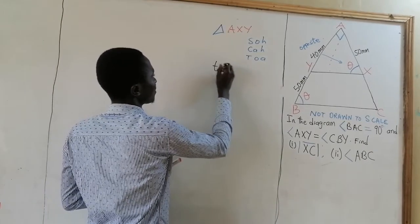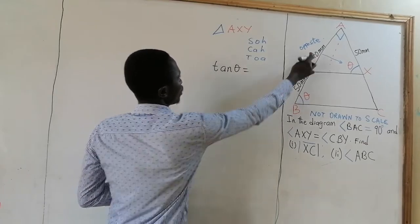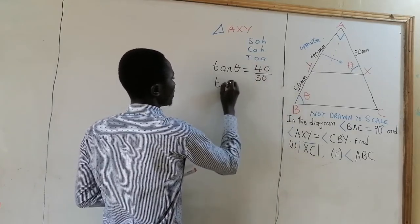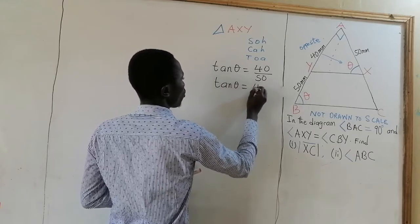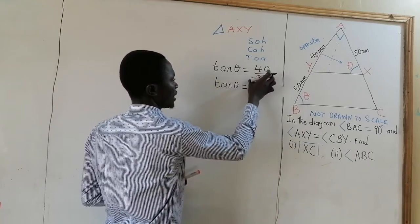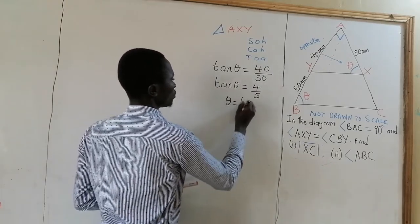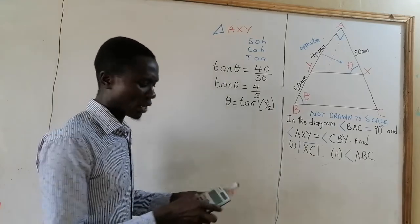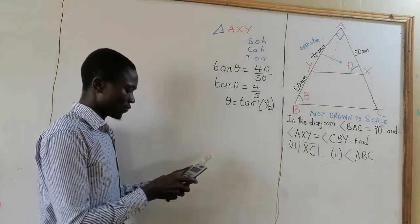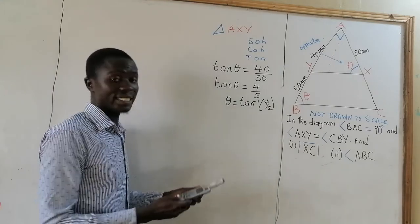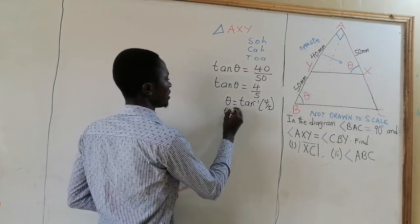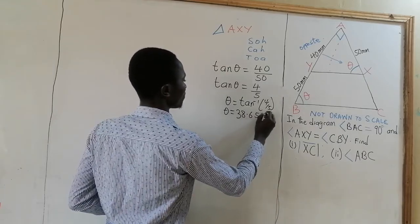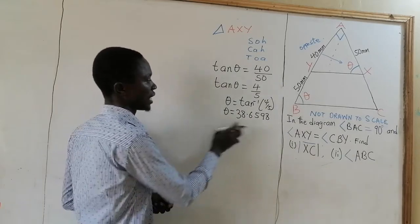Here we are going to have tan theta equals the opposite, which is 40, divided by the adjacent, that is 50. And here we have tan theta equals 4 divided by 5. And theta will equal tan inverse of 4 divided by 5. Now let us use calculator to find that tan inverse of 4 divided by 5. And it will give us approximately 39. Yes, we have 38 point... So here theta equals 38.6598 degrees.